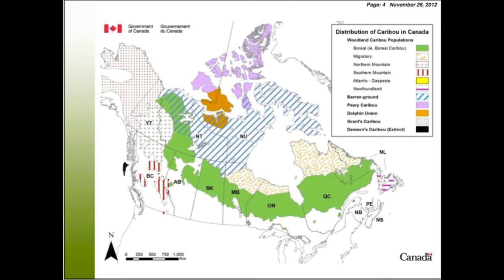This is where they all live. The green here is the boreal caribou that I'm here to talk about today. Usually when people think about caribou, they think about these large herds of migratory animals that occur farther north — those are the barren-ground caribou in this blue-hatched area. In Alberta, there are also some southern mountain caribou.